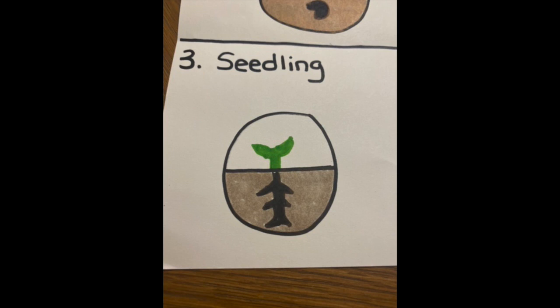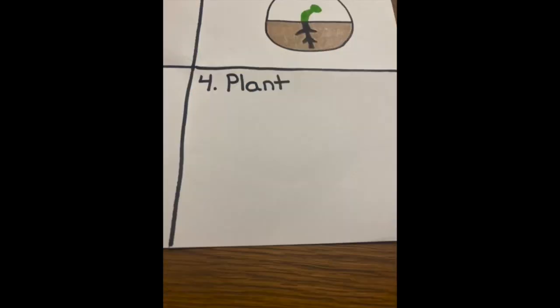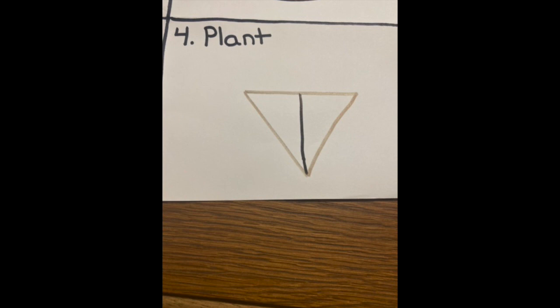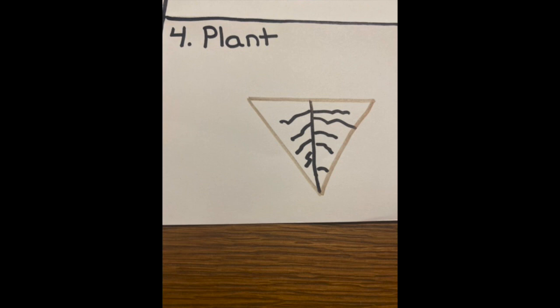Alright scholars, now it's time for our last stage. The word is plant, P-L-A-N-T. We're gonna draw a different shape now scholars. You're gonna draw a triangle that looks like it's upside down, almost like a pizza slice, just like this. Cut your triangle in half just like this. Time to draw our roots. Look at the picture how I drew the roots.